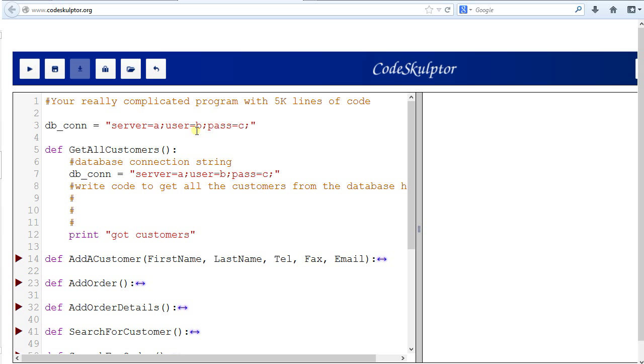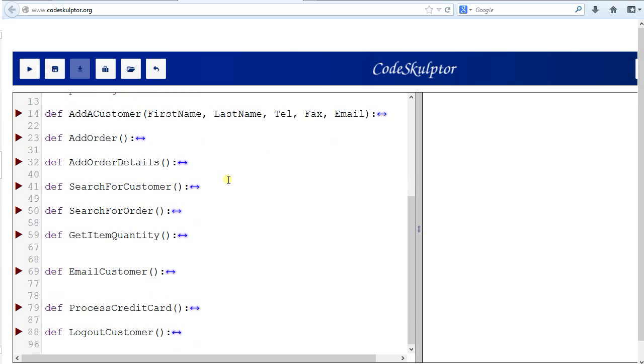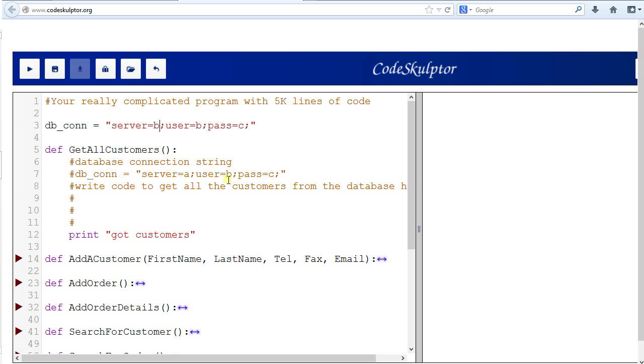A better way to do that would be to initialize a global variable instead, where you set up your database connection string. And instead of creating these local variables to initialize that information, you would simply use the global variables value to connect to your database and fetch your information. So, in this case, if you need to move to a different server, like server B, for instance, you could simply change it in one place and have all your functions still work correctly.